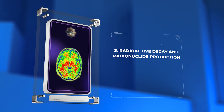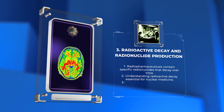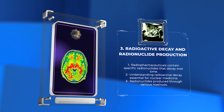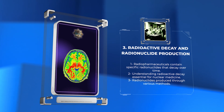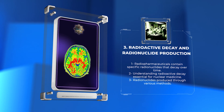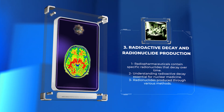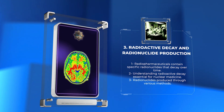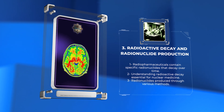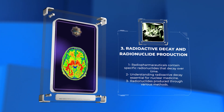Radiopharmaceuticals contain specific radionuclides that decay over time. Understanding the process of radioactive decay is essential in nuclear medicine, as it governs the physical properties and imaging characteristics of radiopharmaceuticals. Radionuclides can be produced through various methods, such as nuclear reactors or particle accelerators, ensuring a reliable supply for medical applications.